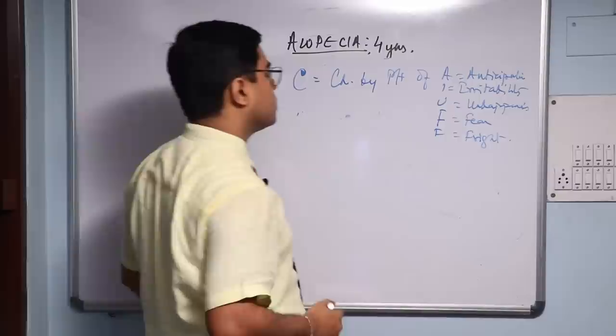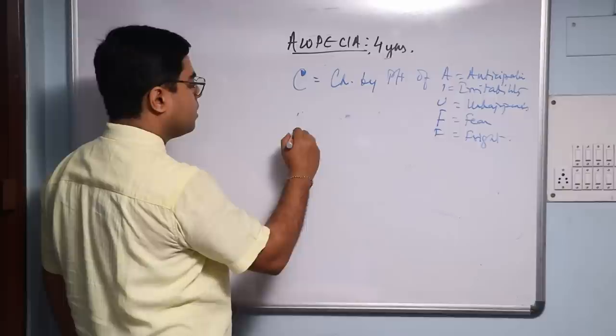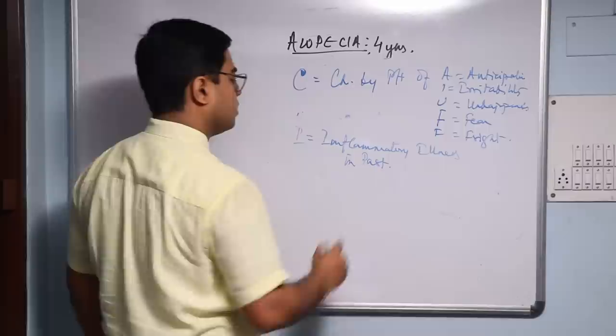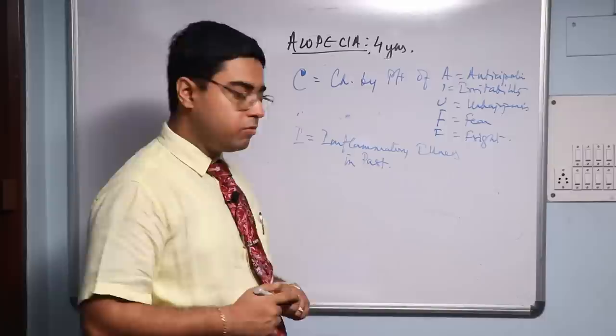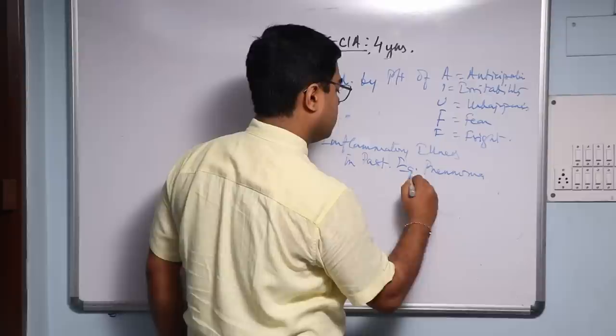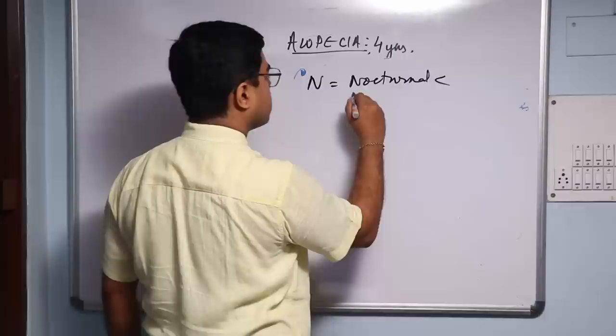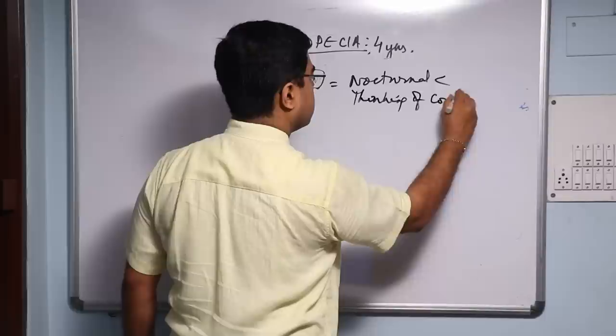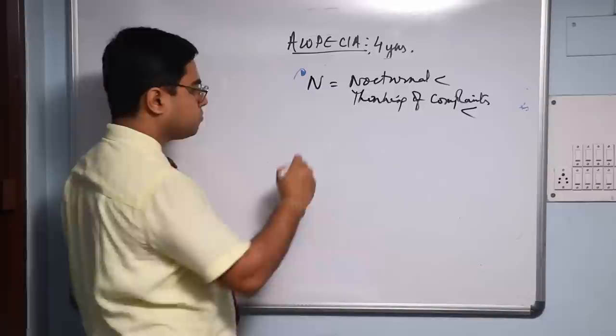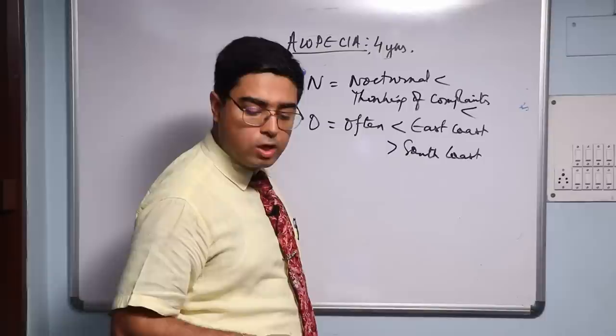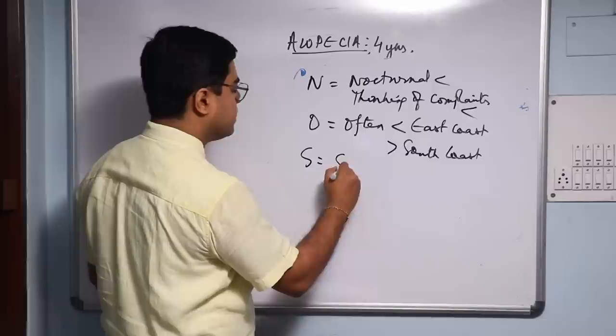CARCINOSIN - another mnemonic. C - Carcinosin emotional picture to develop. A - As I mentioned earlier, Inflammatory illness in the past. Inflammatory illness in the past, as I mentioned, the history of recurrent fever for her, and here it could be Pneumonia or Whooping cough. R - Nocturnal aggravation, night aggravation. C - Carcinosin is often aggravated at east coast, especially with my American participants, and better in the south coast. Even with the east wind they aggravate, and with south winds they feel better.